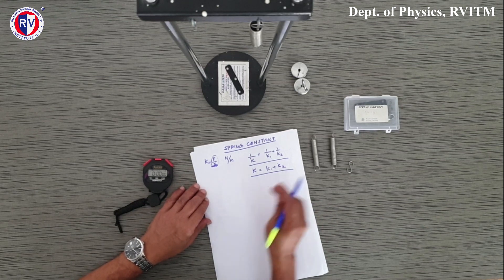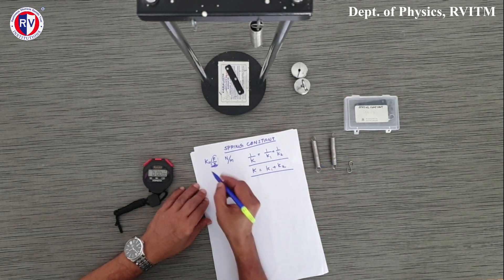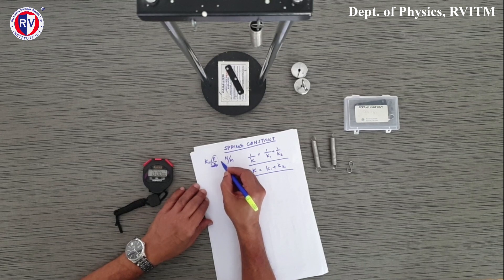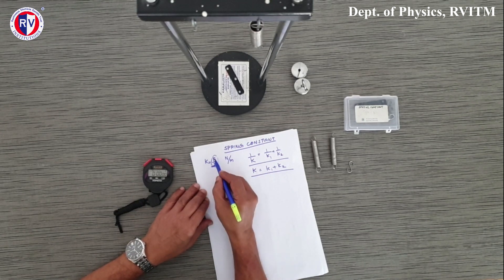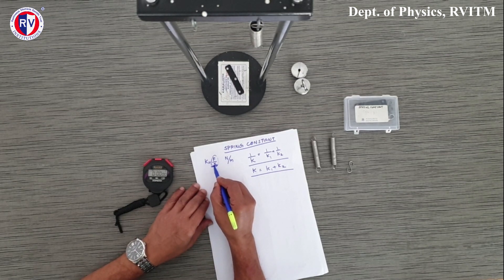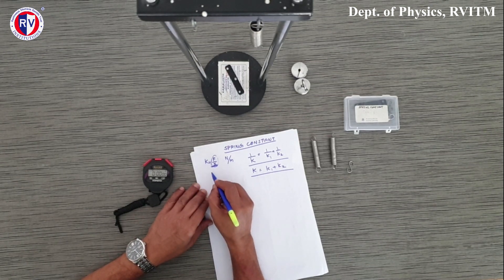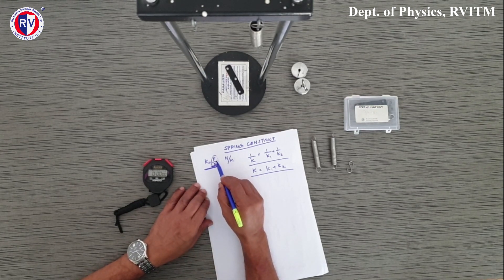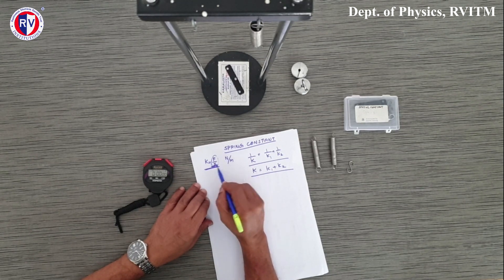As you know, the spring constant is the force required to produce unit extension. So if F is the force applied and x is the elongation in the spring, then the spring constant is expressed as F by x. The unit is force by distance, so it is newton per meter.